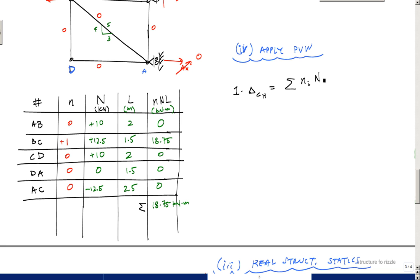It's equal to the sum of n_i × N_i × L_i over E_i × A_i. Because E_i and A_i were constant, I was able to factor this out and say 1 over EA times the sum of n_i × N_i × L_i. This summation right here is this term right there.